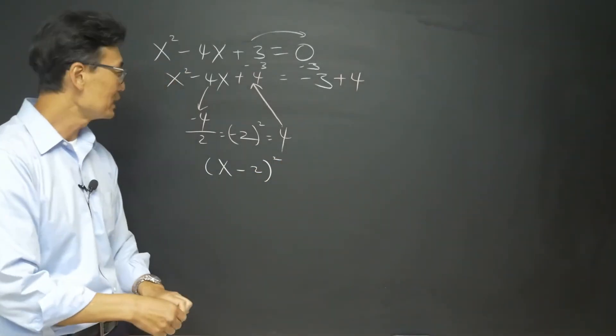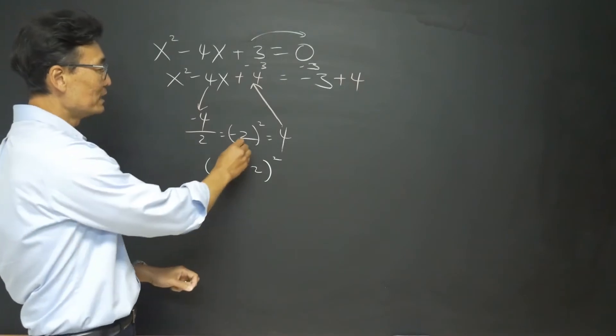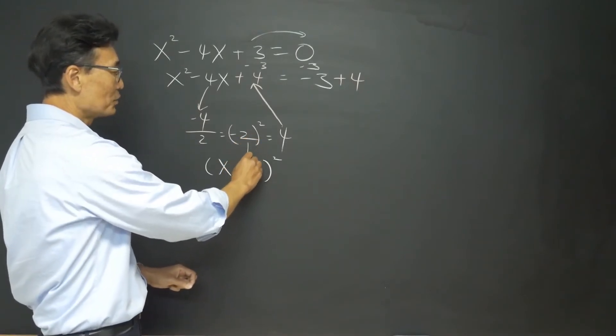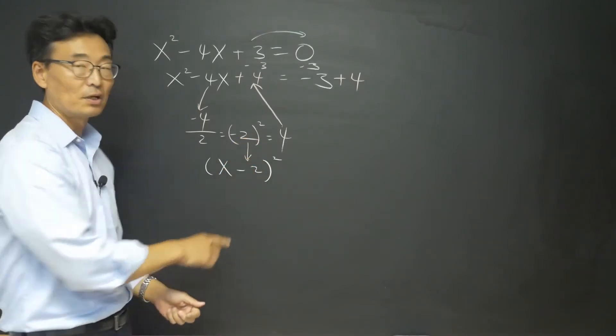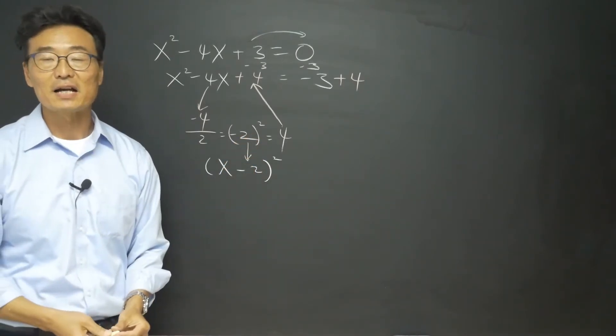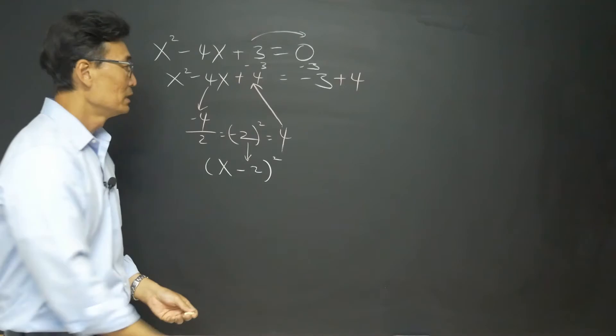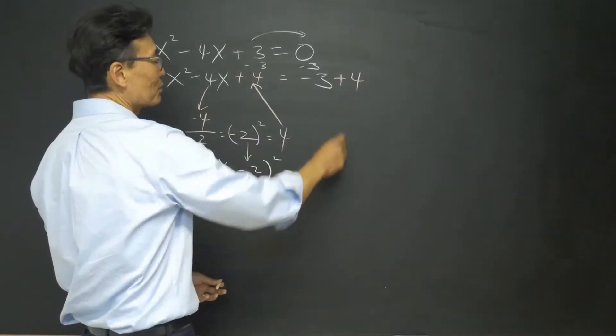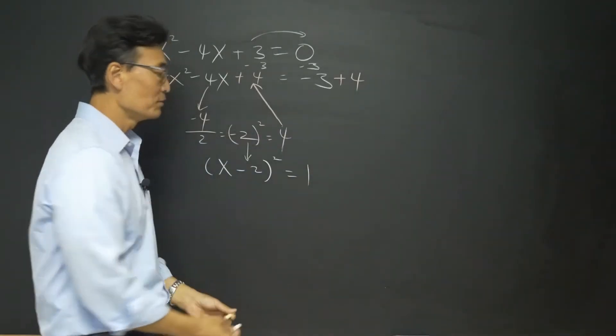Here's a quick hint: notice that negative 2 that we used here is always going to be the number that goes into the factor form. It's equal to negative 3 plus 4, which is 1.